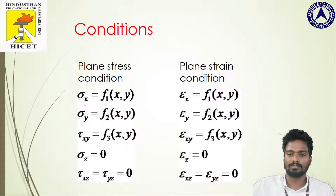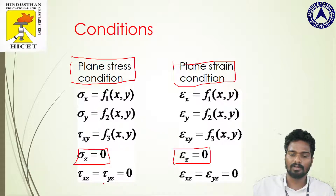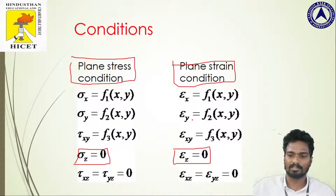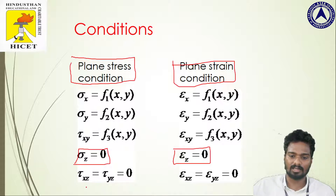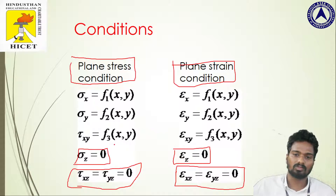The mathematical conditions are very important. Stress in the z direction is considered as zero in plane stress conditions, whereas strain in the z direction is considered as zero in plane strain condition. In the first case, for plane stress, we neglect the stress in z — for example, in thin sheets there is no considerable stress in the z direction. In the second case, for plane strain, the strain in the z direction of a retaining wall or dam is considered zero. Additionally, shear stresses in the z direction are also considered zero in plane stress, and shear strains in the z direction are considered zero in plane strain. These are the mathematical conditions applied to plane stress and plane strain.